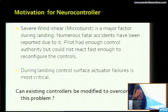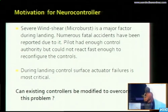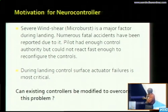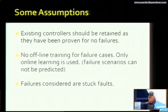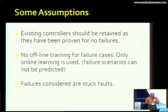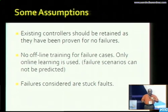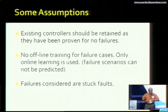Why the motivation for a neurocontroller? Severe wind shear — in many cases the pilot had enough control but could not react fast. During landing, control surface actuator failure is most critical, especially if it commits to auto landing. Can existing controllers be modified to overcome the problem? Some assumptions and criteria: existing controllers should be retained. I cannot throw out the existing controller and put my neural controller — nobody will accept it because that design has been proven over years for safety.